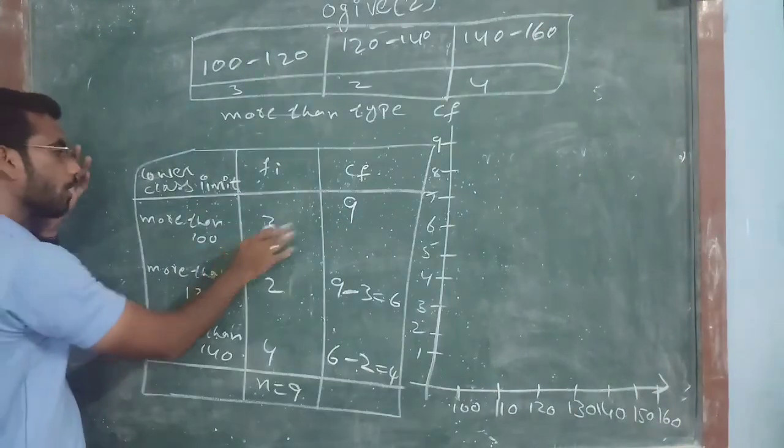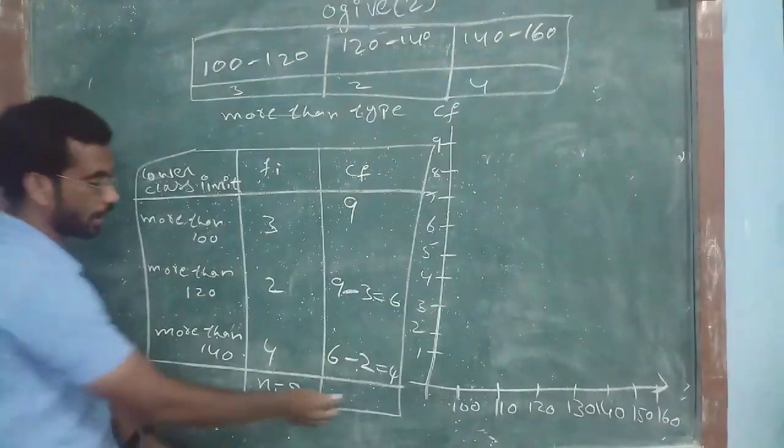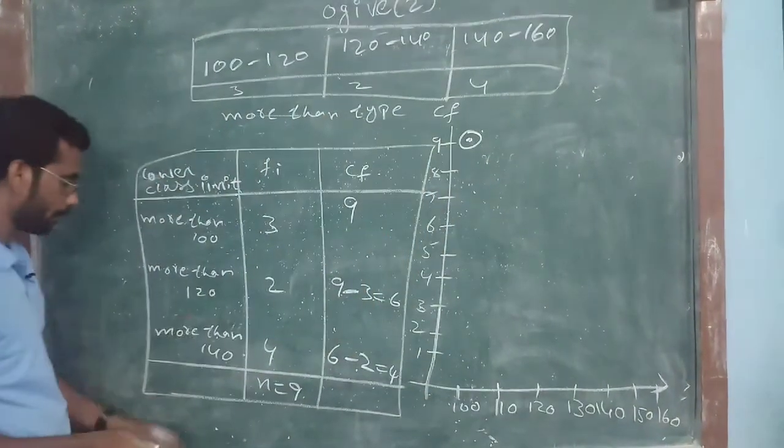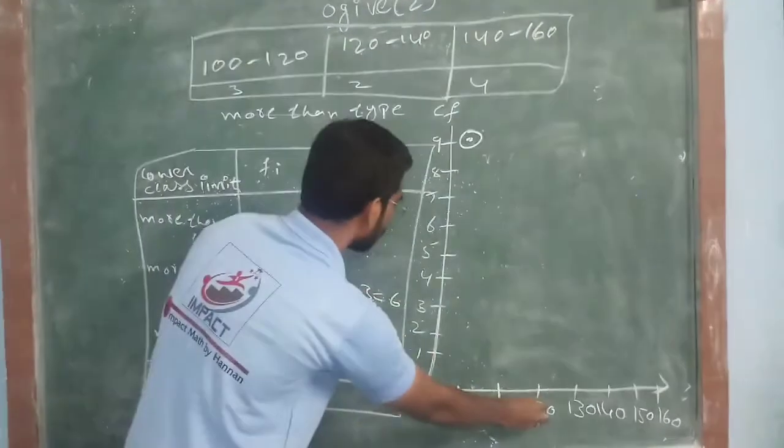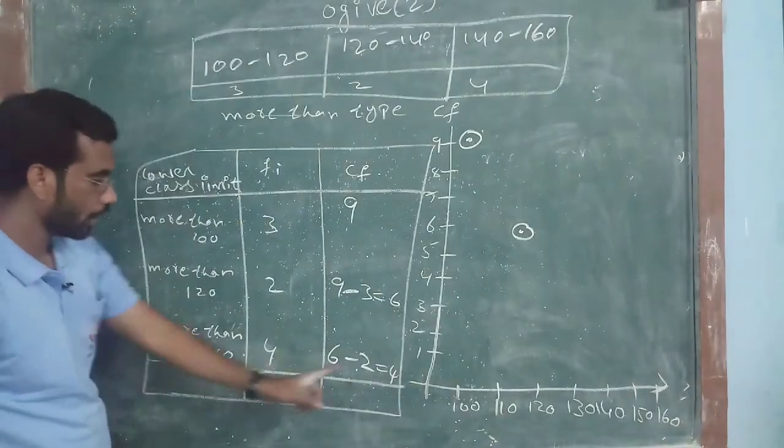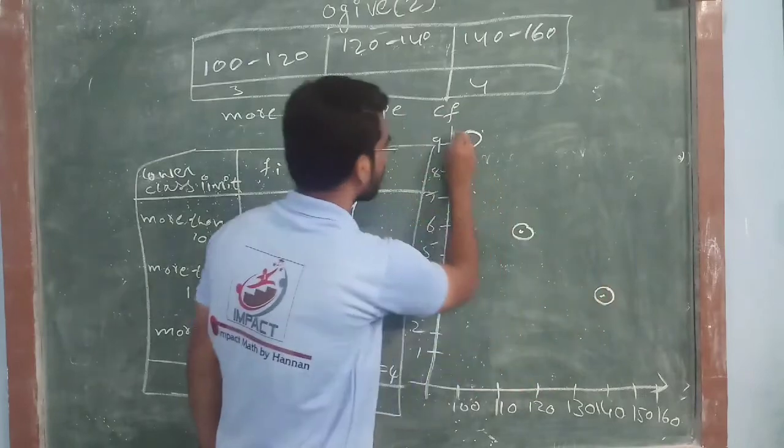See. Now, 100 on 9. 100 to 9. Next, 120 to 6. Next, 140, 4. Join it.